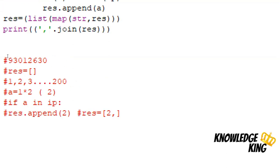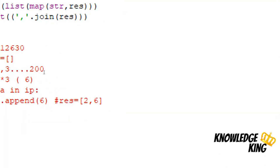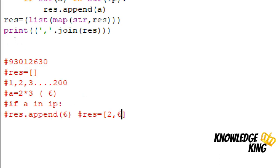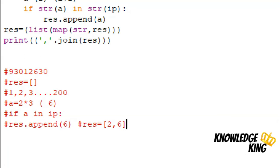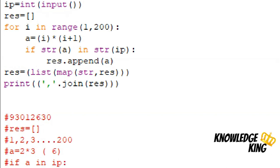In the next iteration, 2×3 = 6. Since 6 is in the input, we append 6 to the result. It iterates till 200, storing all resultant pronic values. After storing all results, I convert the integer list to a string list so I can use the join function to add commas between values, then print the result.